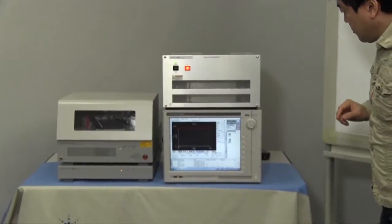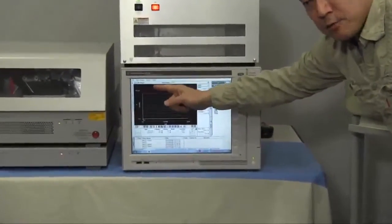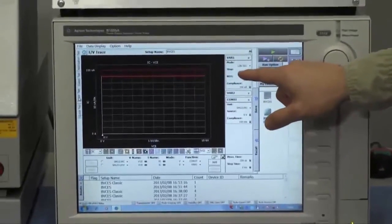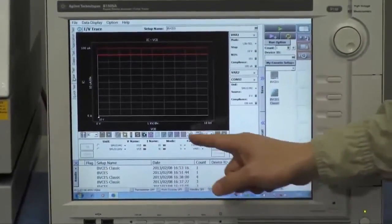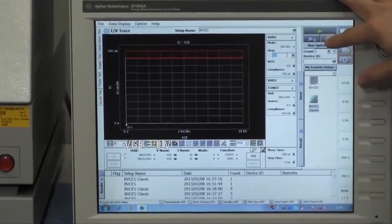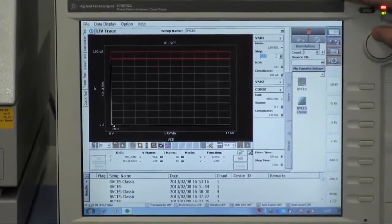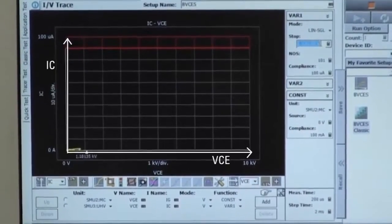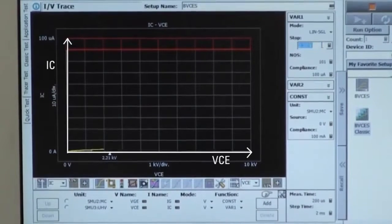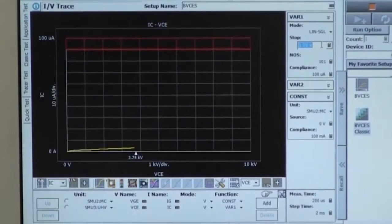Okay, so let's try to measure the breakdown voltage by using tracer test mode here. And here, the gate voltage is set at 0 volt. And now I'd like to change the collector's voltage. Like this. So you can see the increase of leakage current by changing the collector voltage.